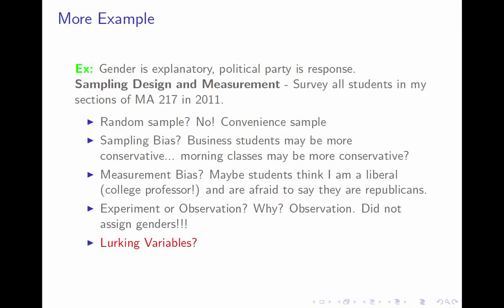What are some possible lurking variables? A lurking variable needs to be a variable with different values for different members of the population, needs to affect the explanatory variable, and be related to the response variable. In this case, there are no plausible lurking variables because there aren't any variables that can affect gender. The only exception I can think of is in frogs, where water temperature during egg gestation can influence gender. So there isn't the opportunity for lurking variables here.